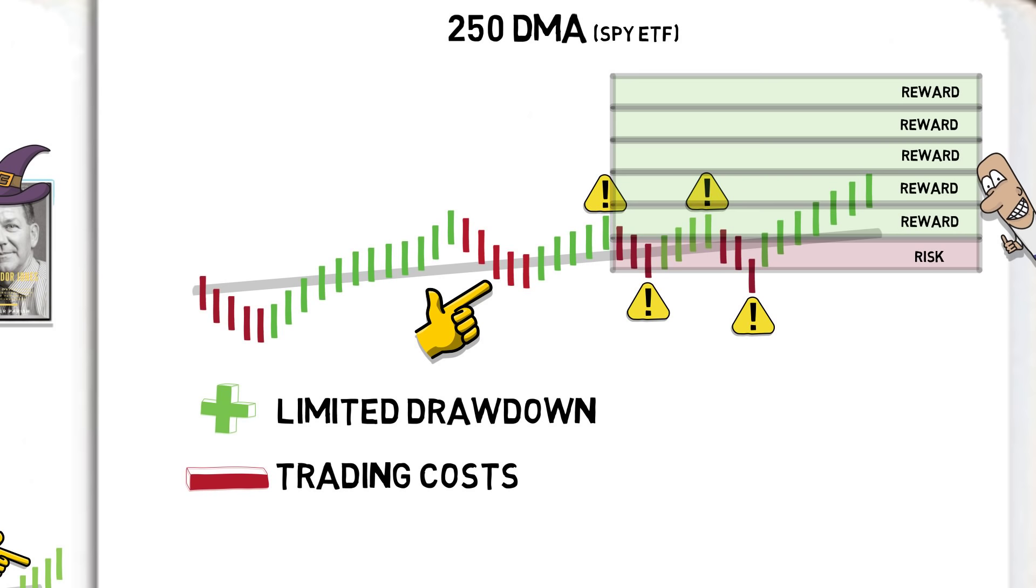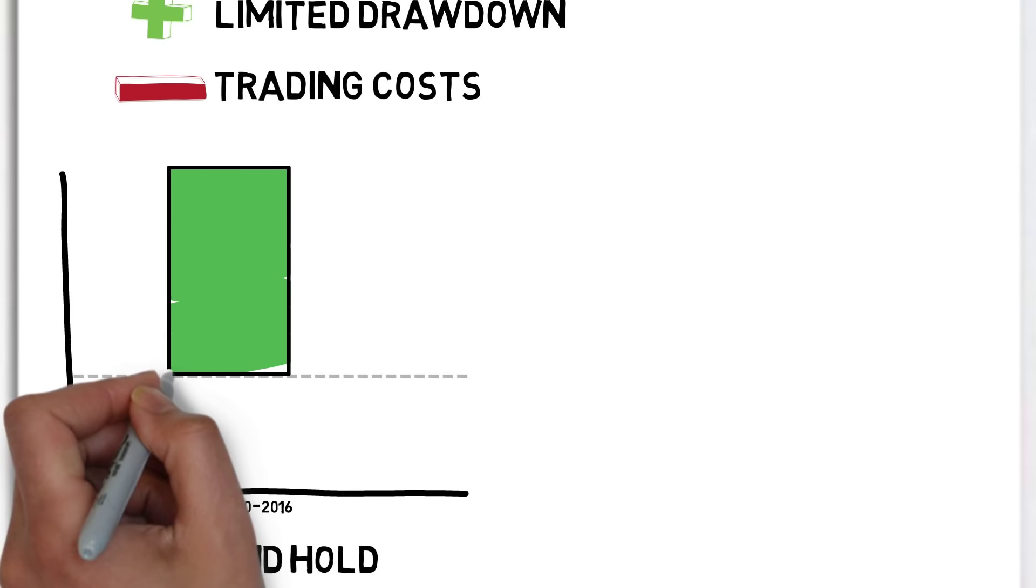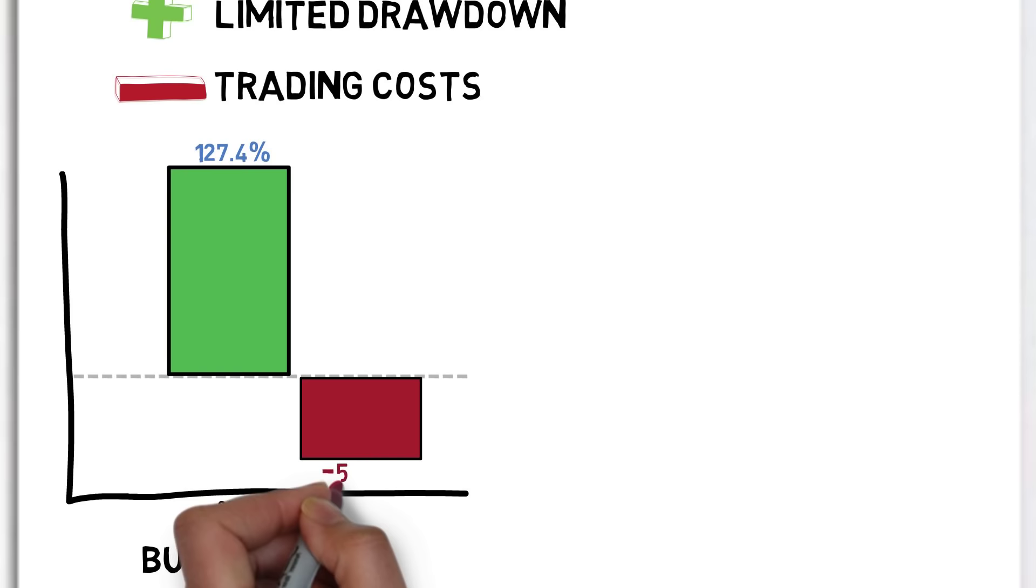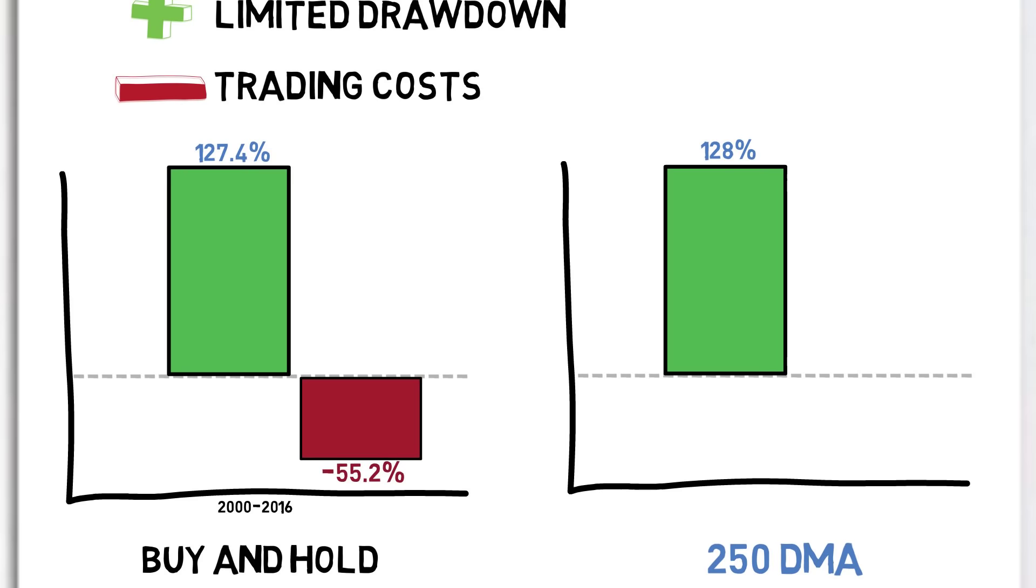Let us look at the results of this strategy against buy and hold over the same 16 year period. The S&P 500 index achieved a buy and hold return of 127.4%, and the maximum drawdown over the same period was 55.2%. The 250 day moving average strategy returned marginally more than buy and hold, achieving 128%, although the maximum drawdown was cut by more than half, at 23.1%.